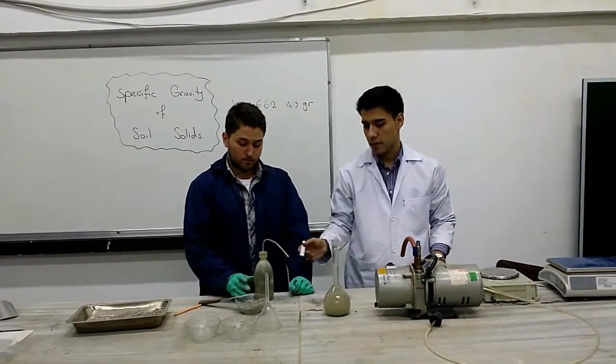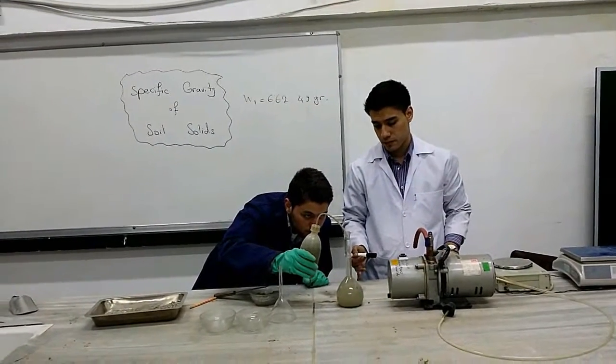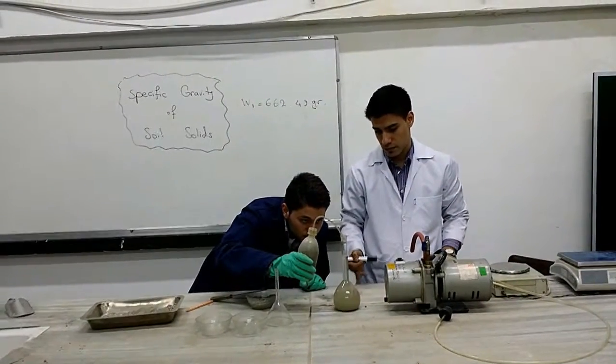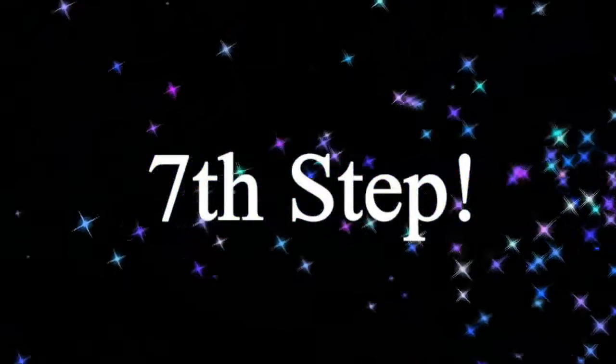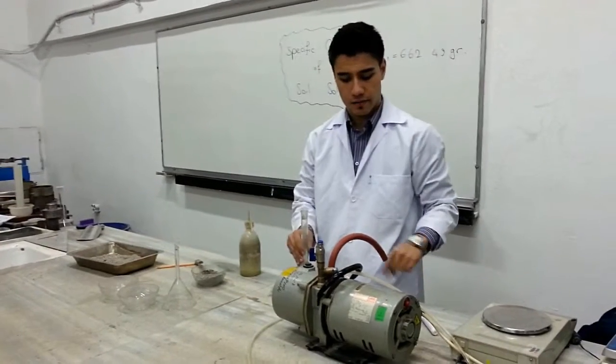Next, we add distilled water to the volumetric flask to make it about two-thirds full. The next step is to use the vacuum pump to extract the air.